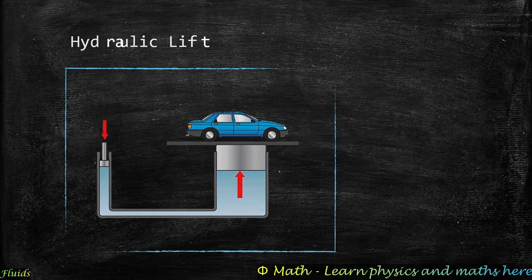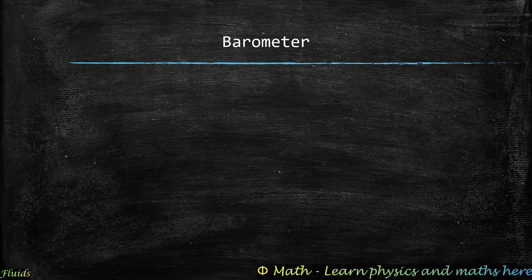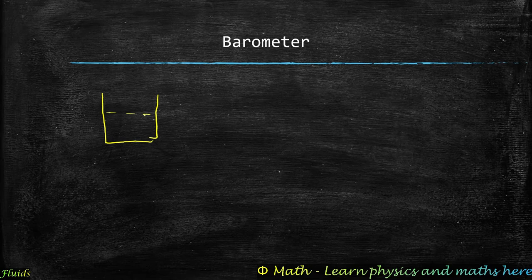Next we look at the mercury barometer, also called the Torricelli barometer. To construct it, we take a container and fill it with mercury — also called Hg in chemistry. We take a test tube, insert it into the vessel, remove all air from it to create a vacuum, and then invert it so the mercury rises up into the tube due to atmospheric pressure pushing down on the open surface.